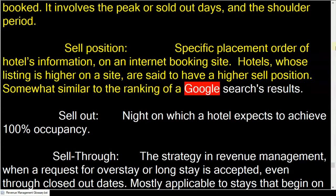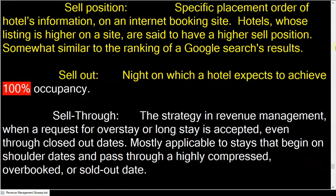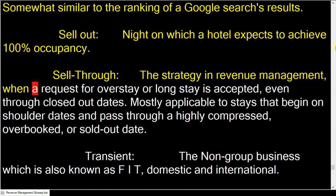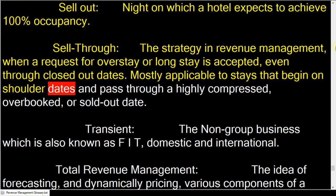Sell position: the specific placement order of a hotel's information on an internet booking site. Hotels whose listing is higher on a site are said to have a higher sell position — somewhat similar to the ranking of Google search results. Sell out: the night on which a hotel expects to achieve 100% occupancy.